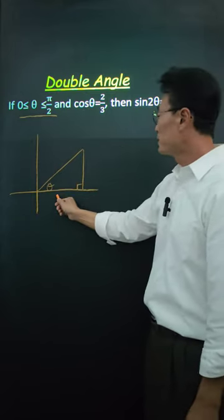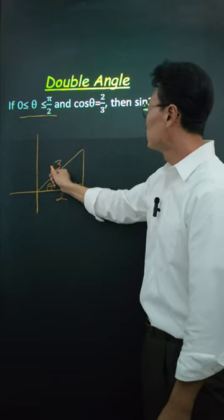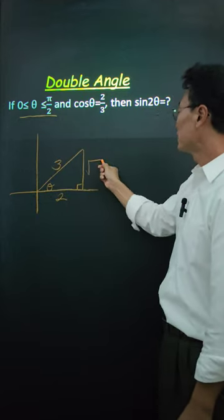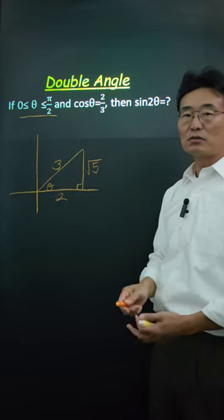And cosine of theta is 2 over 3, so it's going to be adjacent over hypotenuse. And using Pythagorean theorem, we'll find out that the third side is equal to root 5.